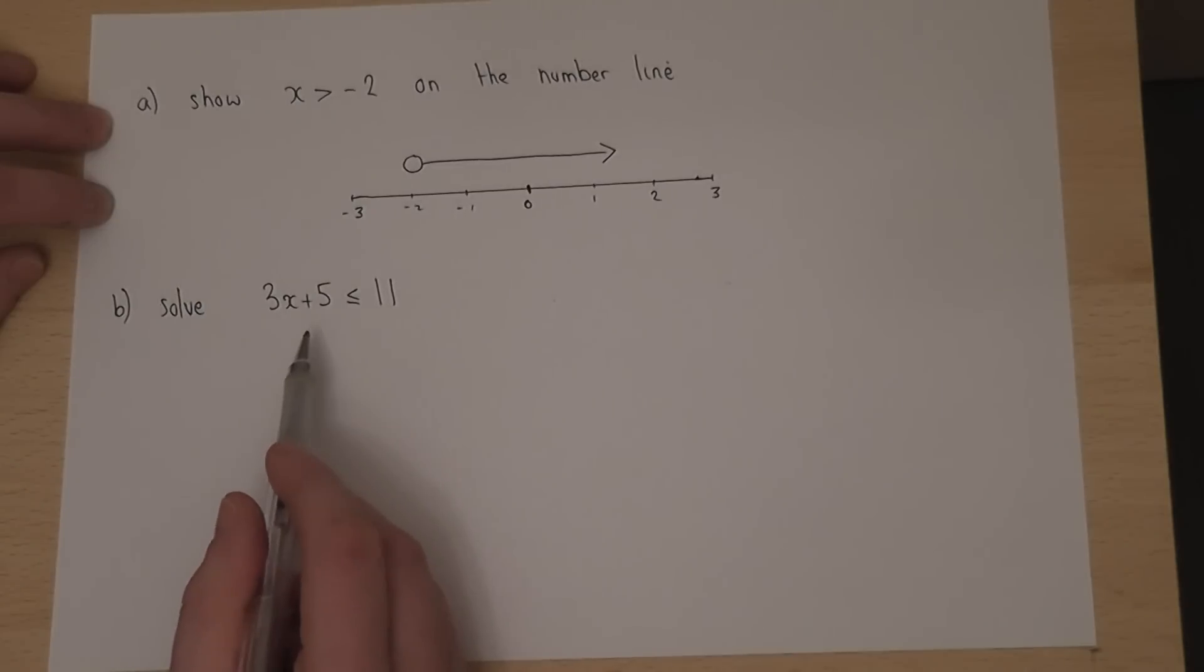In other words, to get x by itself. So, I begin by taking 5 from both sides of the equation.